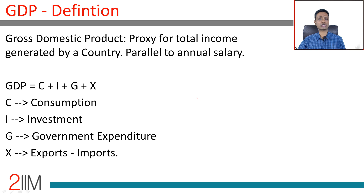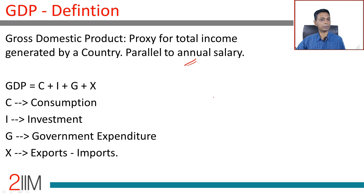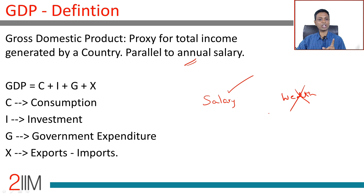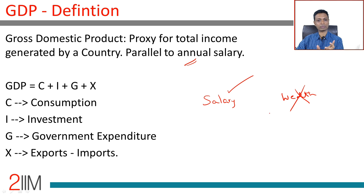What is GDP? GDP is gross domestic product. It is the total value of goods and services produced in a country or region. Broadly and intuitively, it's a parallel for annual salary. It's a salary measure, not a wealth measure. GDP is parallel to how much someone earns in a month, quarter, or year — it's over a period of time, not a snapshot. You don't have GDP on May 1st; you have GDP for a year.